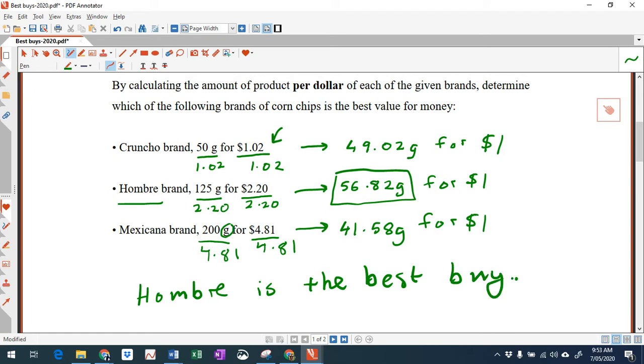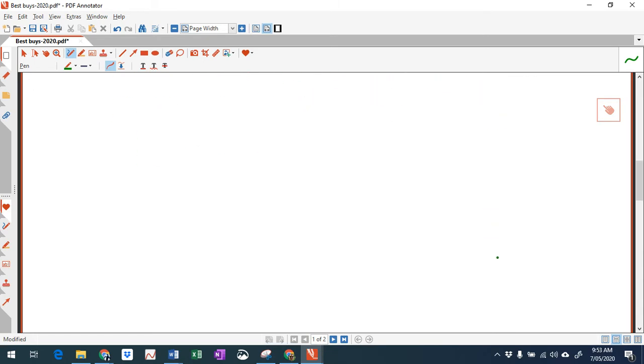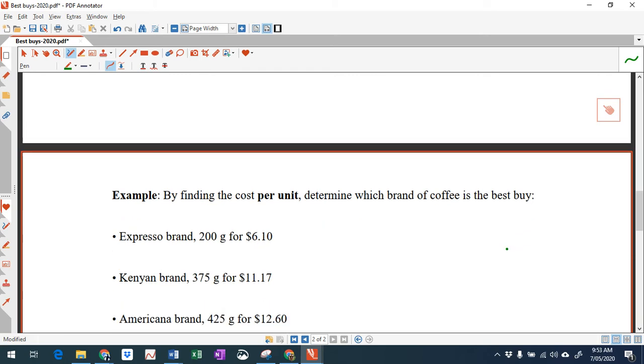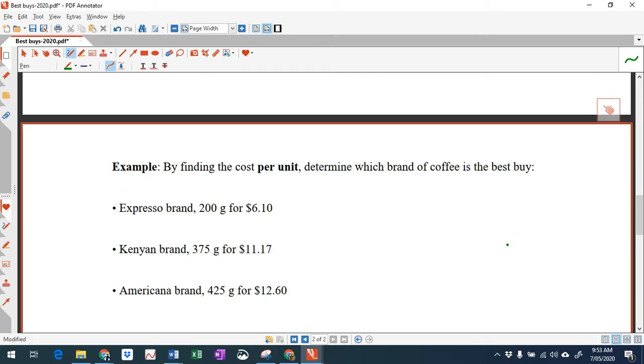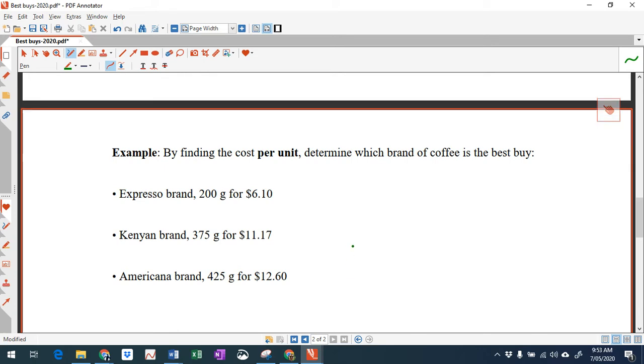Okay. Now let's have a look at the next example. We've got three different brands of coffee. This time, the question says, work out the cost per unit. Now, per unit means we've got to work out the cost per gram in this case. Not per dollar, per unit. So per gram.